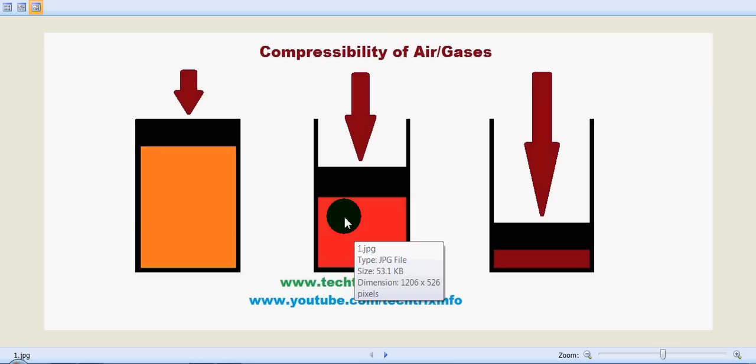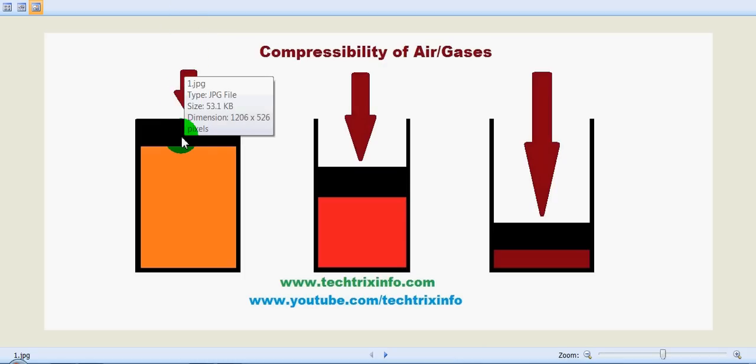These cylinders are filled with air. This is the first cylinder filled with air or gas, shown in light orange color, with a piston on top. We are applying a load to this piston, which is capable of moving up and down.